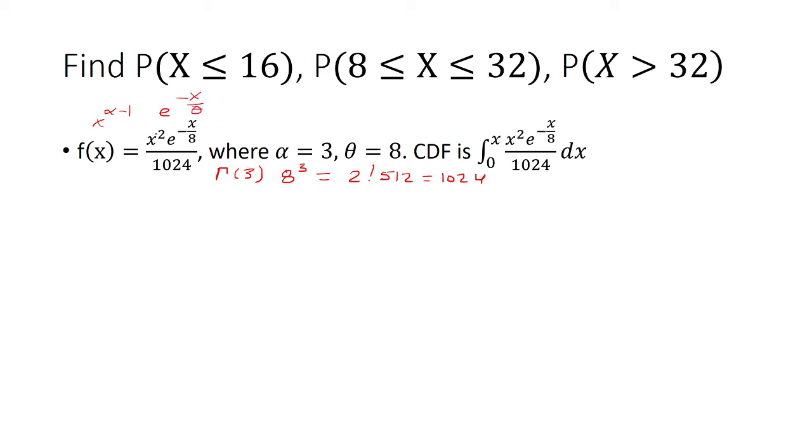So theta was 8, alpha was 3. So now for the cumulative density function, this is what we have. And technically, we should be using different units here, so let's use y instead. It doesn't matter.